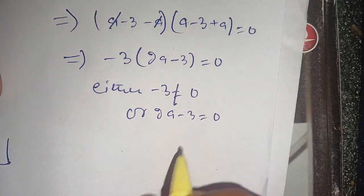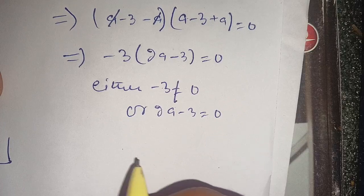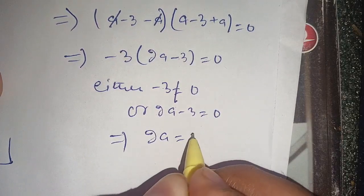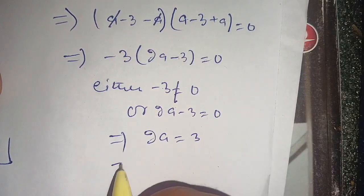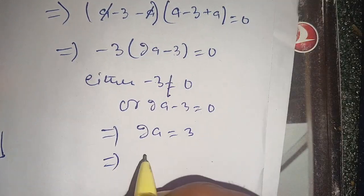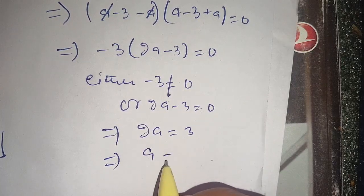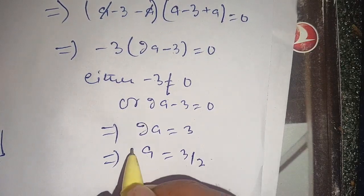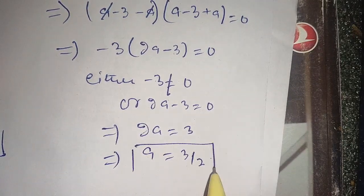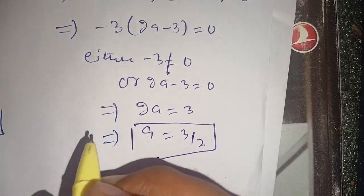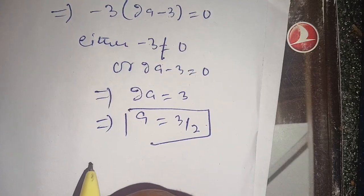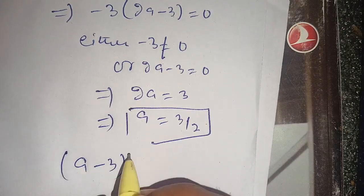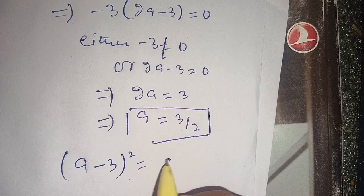Thus we consider the case: 2a minus 3 is equal to 0, and we get 2a is equal to 3, which implies a is equal to 3 divided by 2. Now our equation is (a minus 3) whole square is equal to a square.